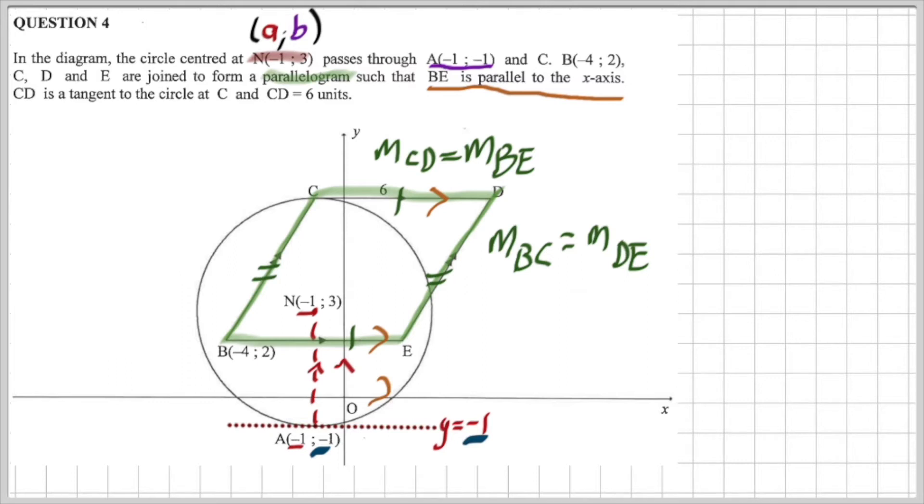And it says that C, D is a tangent to the circle. Now remember that the radius NC must now be perpendicular to the gradient of C, D. Which means that the X value of C is the same as the X value of D because they lie vertically above one another. That is crucial to understand. That is crucial to understand because that means the X value of C is definitely negative one. The last little bit of information tells me that C, D is six units. But if C, D is six units, well then B is also six units because it is a parallelogram.